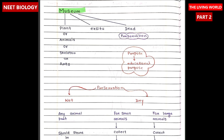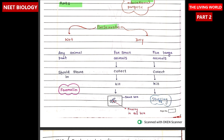Museum is an institution that collects, preserves, and exhibits artifacts, artworks, or scientific specimens for education, research, and public enjoyment. It contains plants, animals, skeletons, arts — ex situ dead preservation. Purpose is education. Preservation is of two types: wet preservation and dry preservation. Wet preservation is done for any animal part, stored in formalin. For dry preservation: small animals are collected, killed, and pinned in a small box; for large animals, they are collected, killed, and stuffing is done.